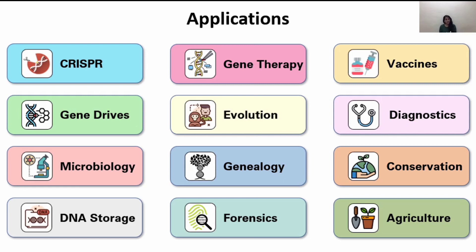Now that we know the basics, what are the applications of molecular genetics? Since it is the basis of life, its applications are very vast — right from conservation to evolution studies, to forensics where we use DNA fingerprinting, to agriculture, to vaccines. The current SARS-CoV-2 vaccines — some of them are DNA vaccines, and the Moderna one is actually an RNA vaccine.